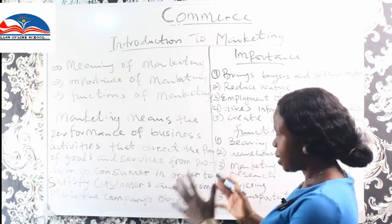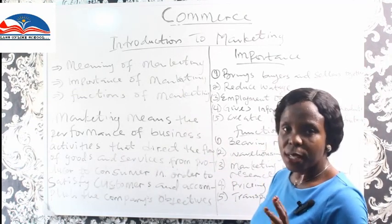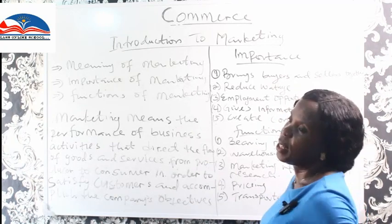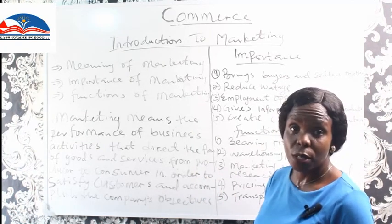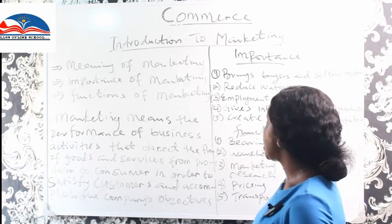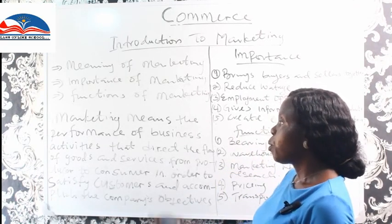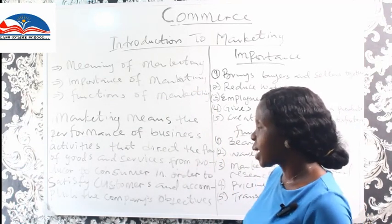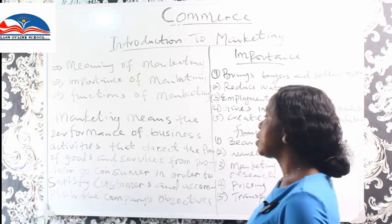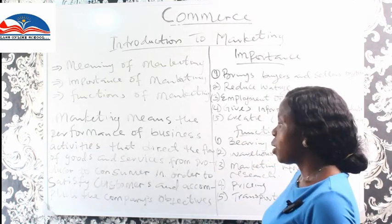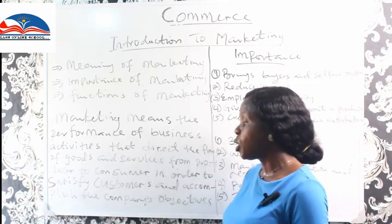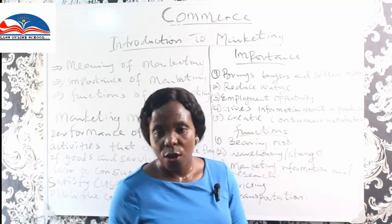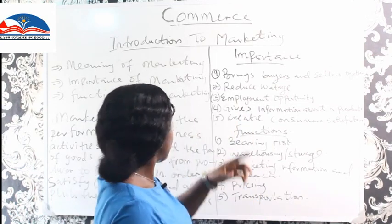Remember, we have three objectives for this class: the meaning of marketing — which I've just been explaining; why marketing is important to business; and what the functions of marketing are. Let's move to the second objective. Bear in mind the definition: marketing is the performance of business activities that directs the flow of goods and services from producers to consumer in order to satisfy consumers and help accomplish the company's objective. Companies have objectives, consumers have needs — all of them must come together for proper marketing to take place.